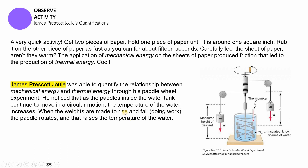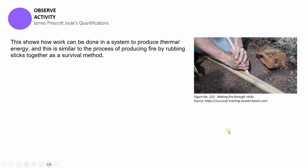James Prescott Joule was able to quantify the relationship between mechanical energy and thermal energy through his paddle wheel experiment. He noticed that as the paddles inside the water tank continue to move in a circular motion, the temperature of the water also increases. When the weights are made to rise and fall — which does work — the paddle rotates, which then continues to raise the temperature of the water. As more work is done on the system, mas nagiging mainit din yung mismong system. This shows how work can be done in a system to produce some thermal energy.